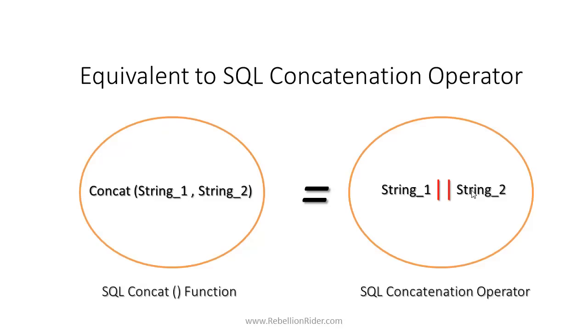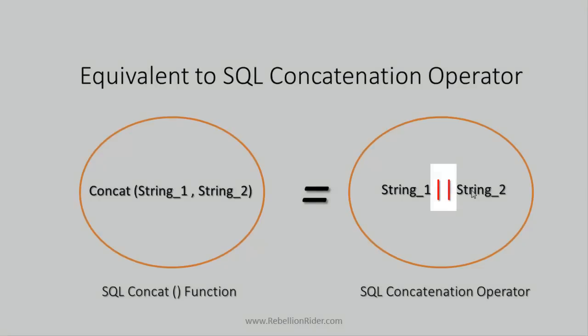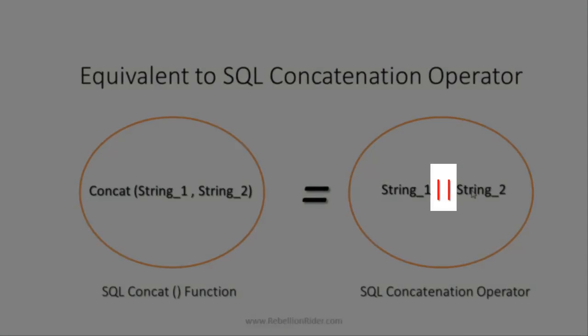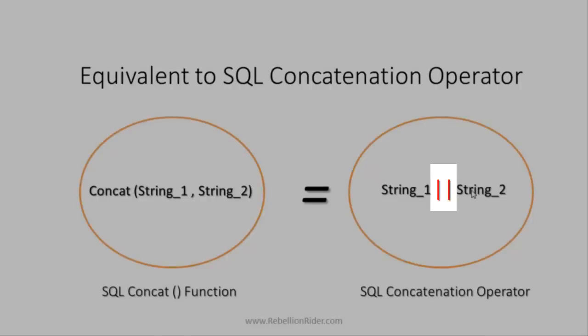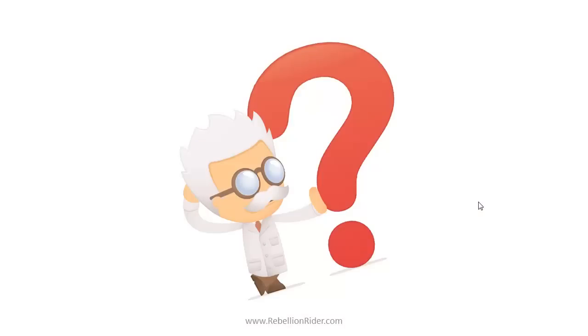SQL Concat function is equivalent to the concatenation operator. SQL concatenation operator is represented by double solid vertical bar, or we can say double pipe sign. How to concatenate more than two strings, as SQL Concat can have only two parameters? And what is the difference between SQL Concat function and SQL concatenation operator?